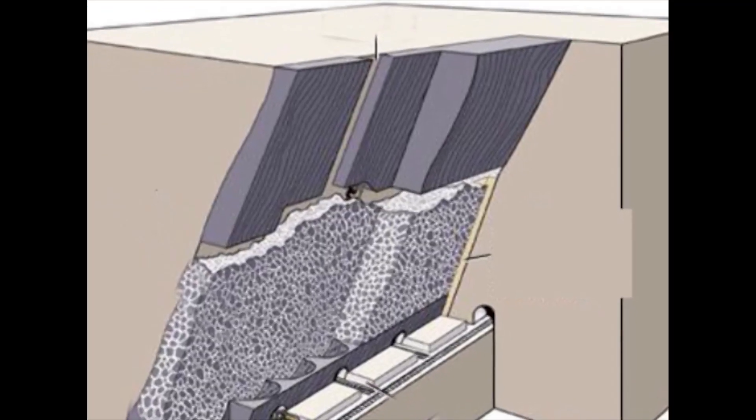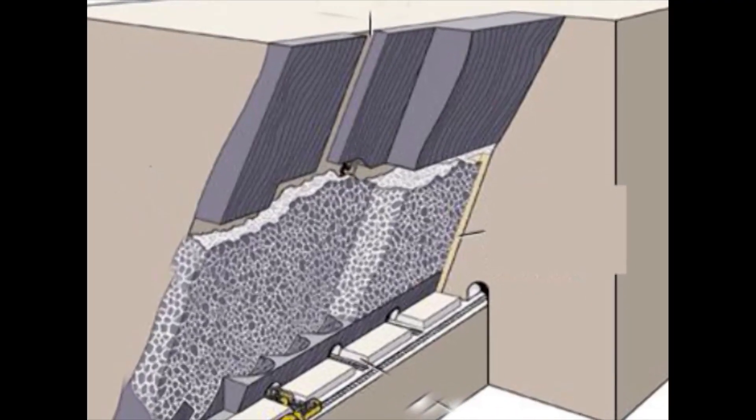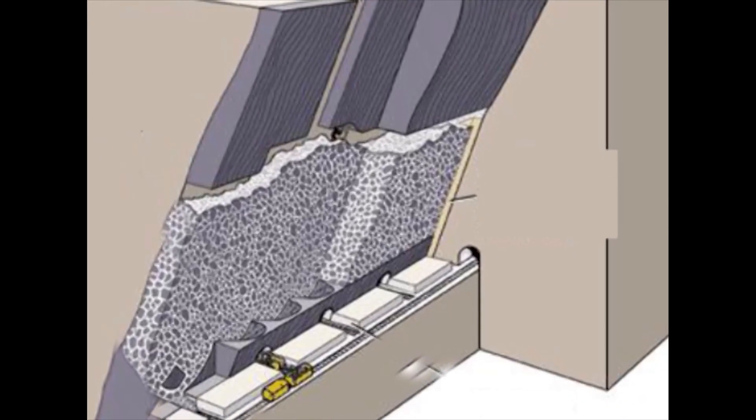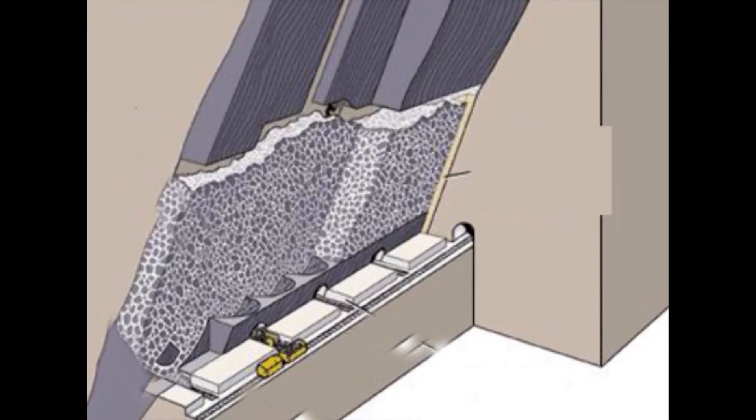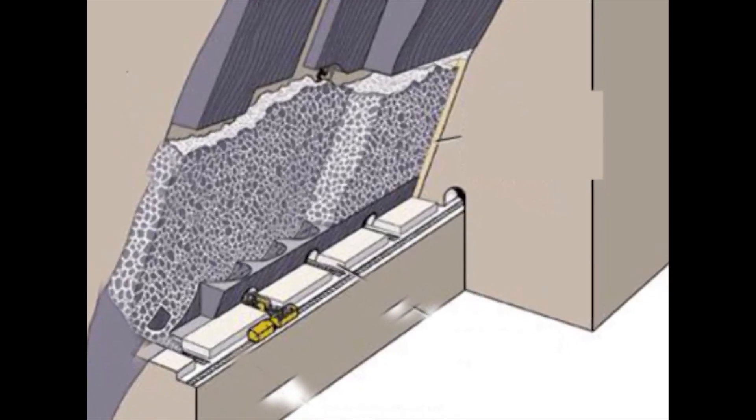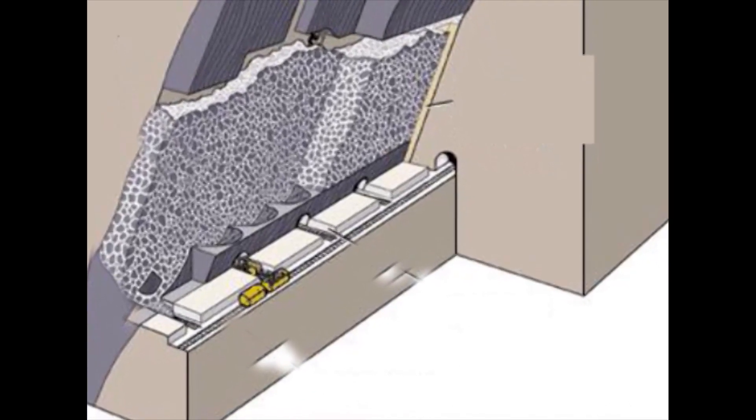Shrinkage stoping may be termed a classic mining method, having been perhaps the most popular mining method for most of the past century. It has largely been replaced by mechanized methods but is still used in many small mines around the world. It is applicable to mineral deposits with regular boundaries and steep dip hosted in a competent rock mass. The blasted ore must not be affected by storage in the stopes — for example, sulphide ores have a tendency to oxidize and decompose when exposed to air.